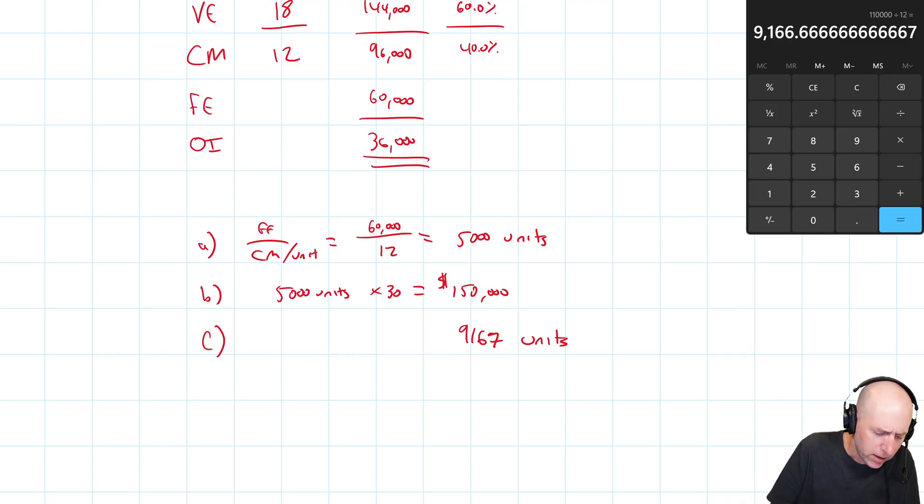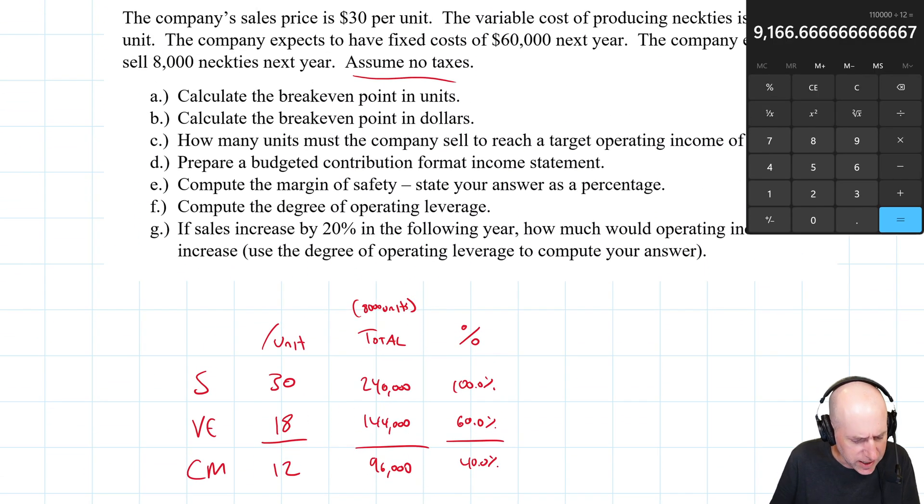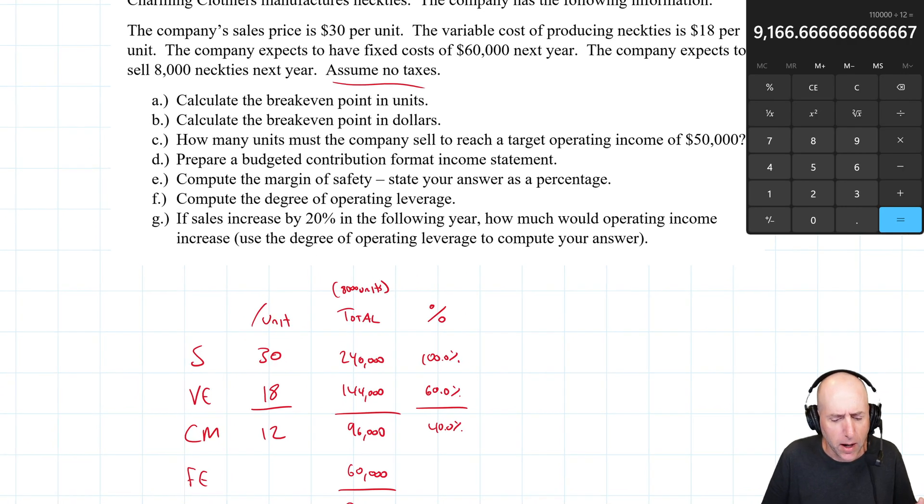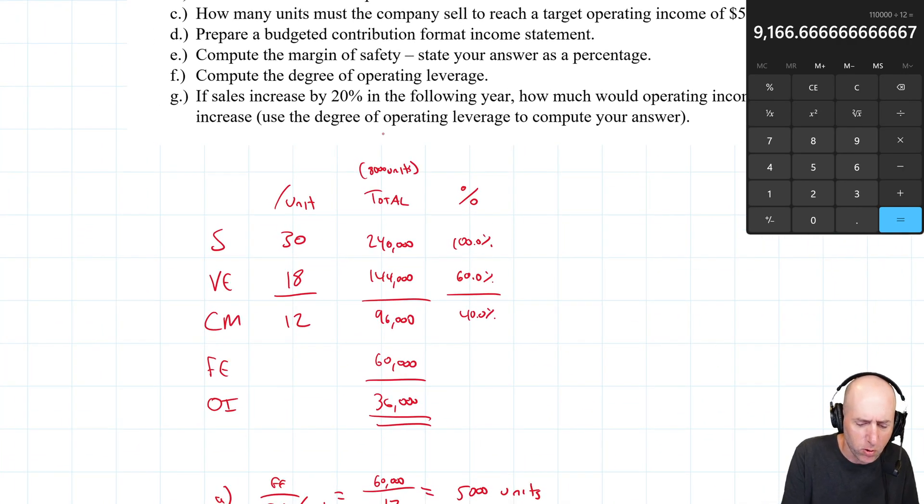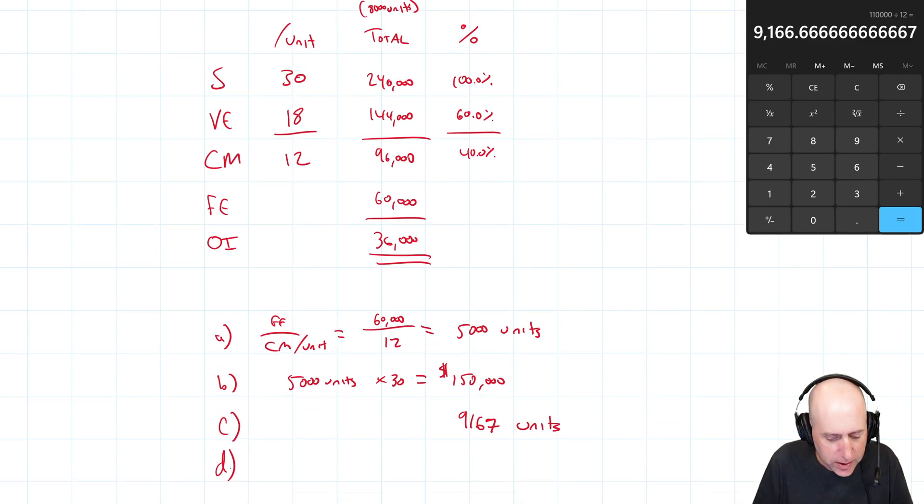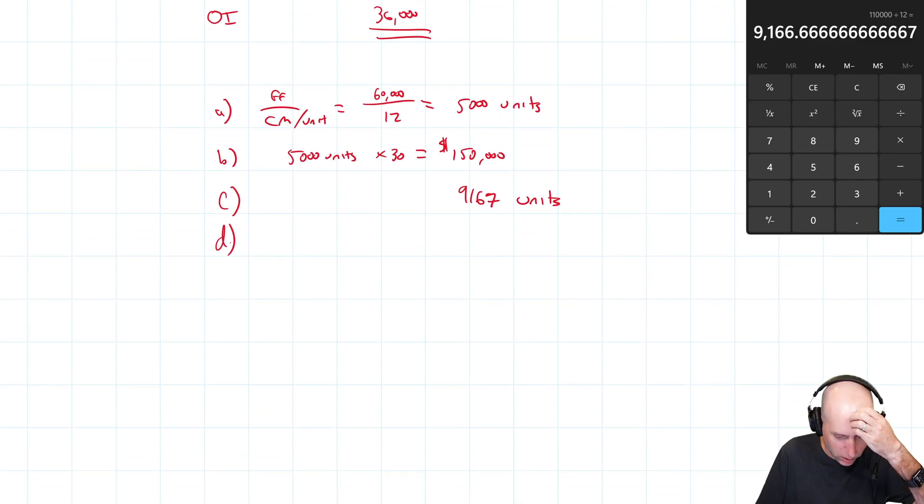This one though, I would think, well we're in the ballpark anyway. Let's move on to D. D says prepare a budgeted contribution format income statement. We've kind of done a rough one. When an accounting textbook asks you to prepare an income statement though, it's typically looking for a three line title and proper formatting. So let's provide that. I mean, this information is right here in this middle column. We've done it, we've got all the information we need, but let's play ball with the question.